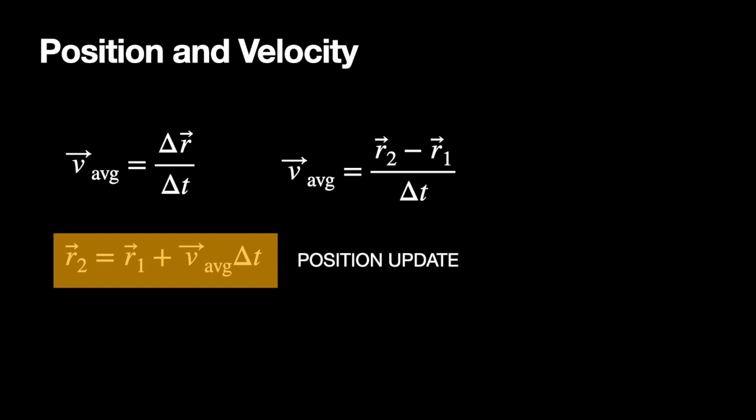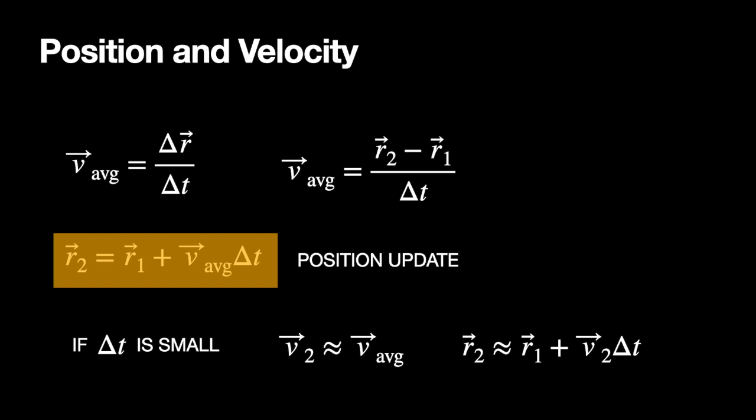Now, if delta t is small — and what does small mean? Nobody knows, but if it works, it works — then v2, the velocity at the end of the time interval, is approximately equal to the velocity at the beginning. And if that's true, I can write the position update formula as r2 approximately equals the initial position plus v2 times delta t. You could use average velocity or the velocity at the end; if delta t is really small, it doesn't make a big difference. I'm going to use v2.